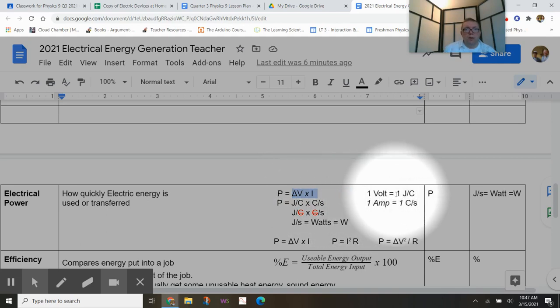And if we remember that one volt is one joule per coulomb, and current is measured in amps and one amp is a coulomb per second, we can see that a joule over a coulomb times a coulomb over a second, those coulombs cancel and we get joules per second, which is a watt.